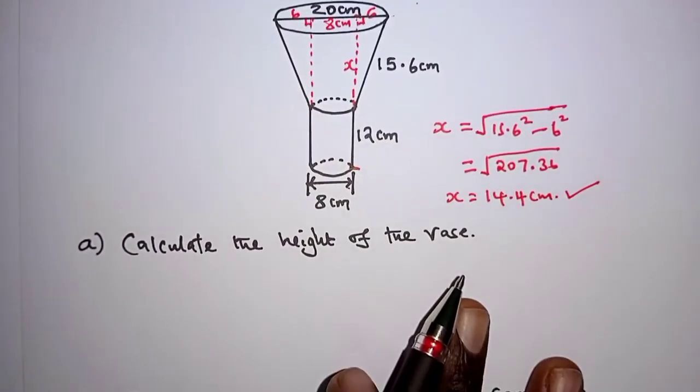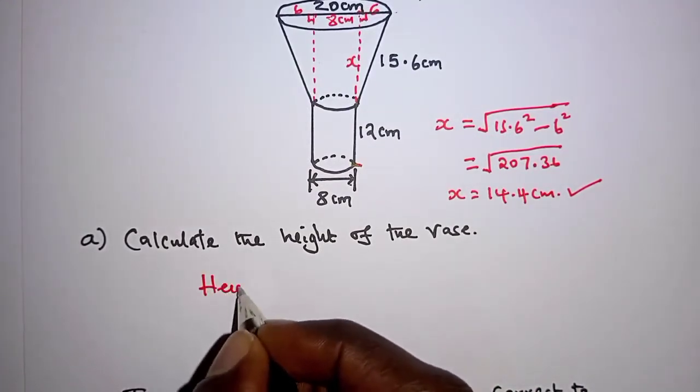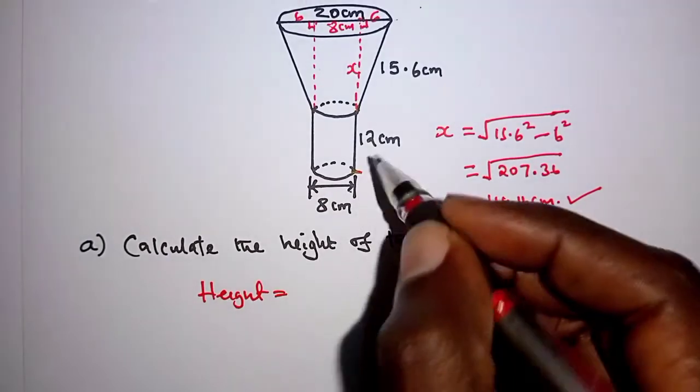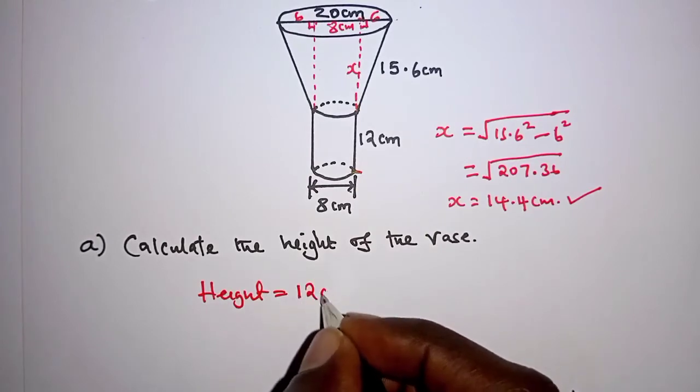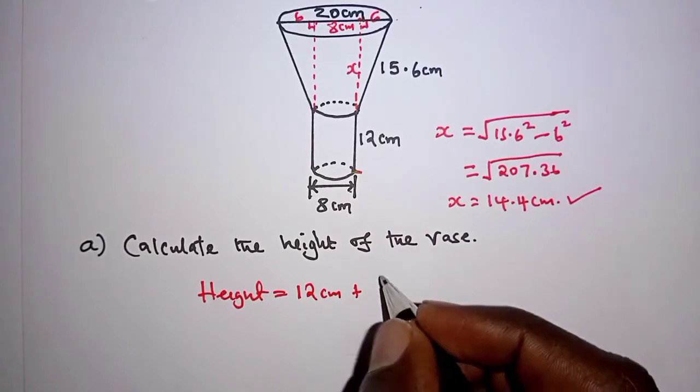we can therefore calculate the height of the vase. And that means the height of the vase will be equal to the height of the cylinder,